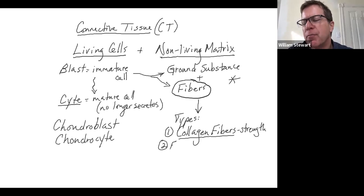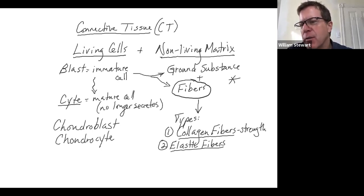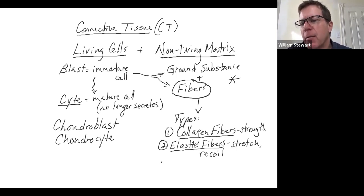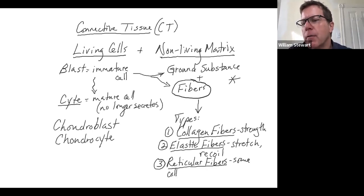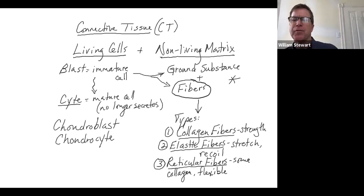Second, elastic fibers are not as strong as collagen fibers, but they're rich in the protein elastin, which gives them the ability to stretch — kind of like a rubber band — and recoil, snapping back into original shape. Third, reticular fibers are kind of in between the first two: they have some collagen but are not quite as strong as collagen fibers, and they are also flexible. So they're a mediator between numbers one and two.